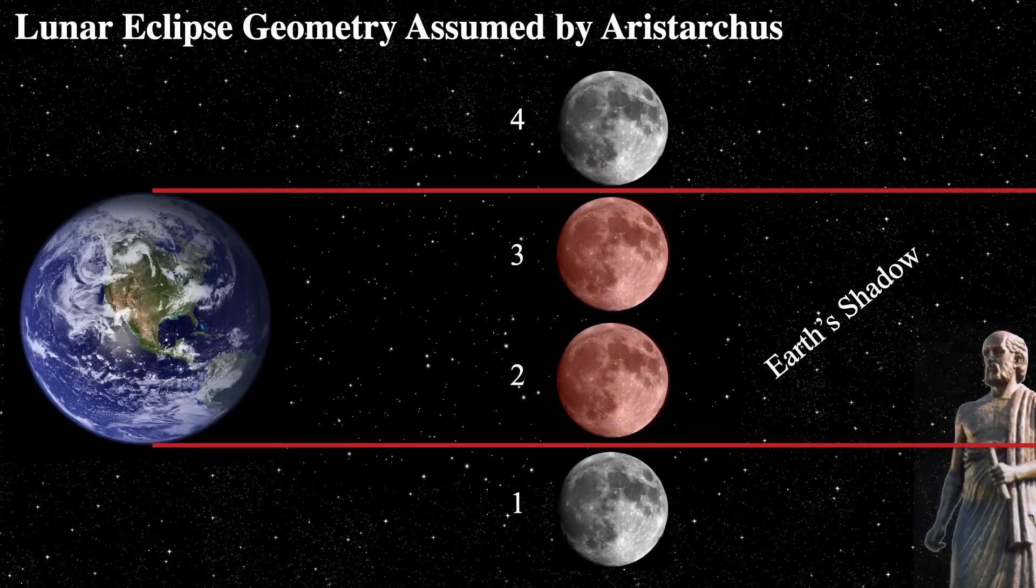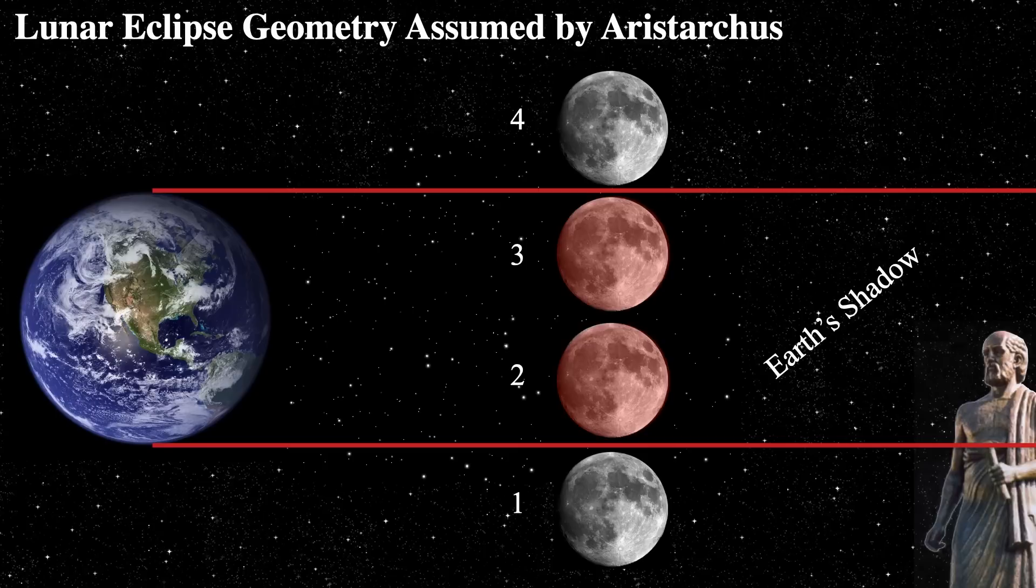this assumes something. It assumes that the shadow of the earth is linear and goes out for a very long way and doesn't taper. We know it tapers. There's a place far behind the earth where it does not cast a shadow. That wasn't what Aristarchus thought. Aristarchus said, wait a second. The moon is about half the size of the earth.